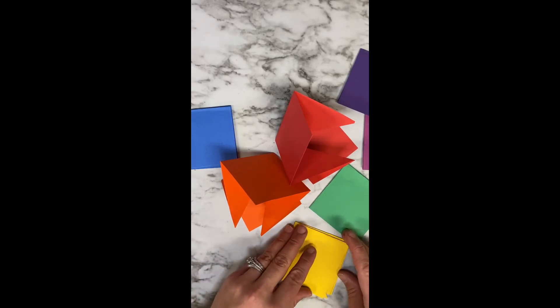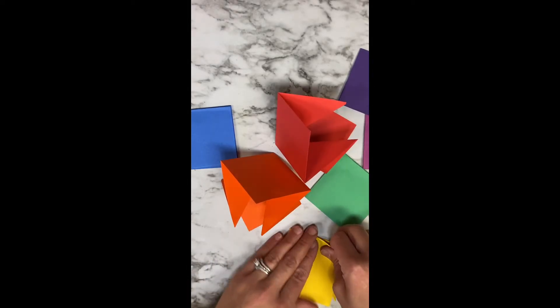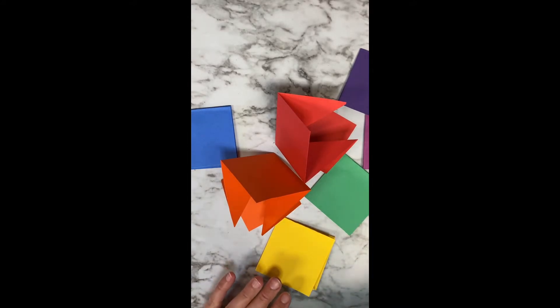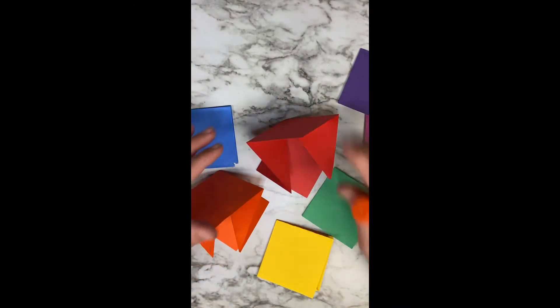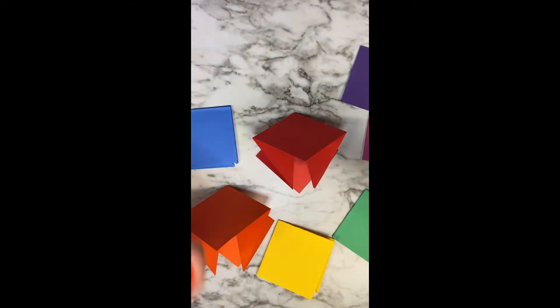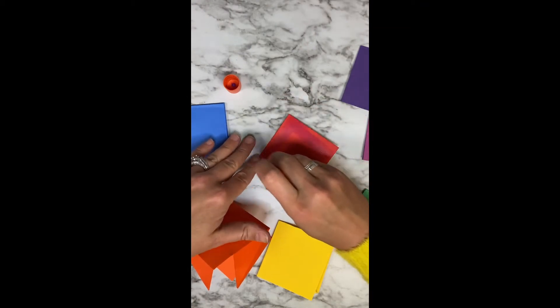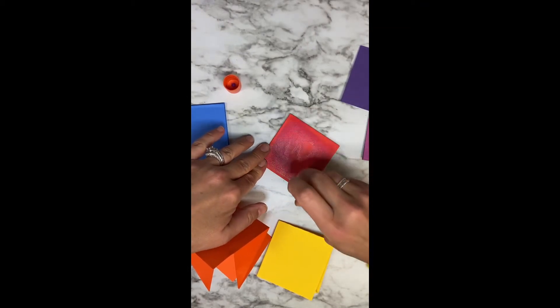So the next step is you are going to take your glue stick and you are going to put glue on the front of the red. Cover it with a glue stick. Don't use liquid Elmer's with this.